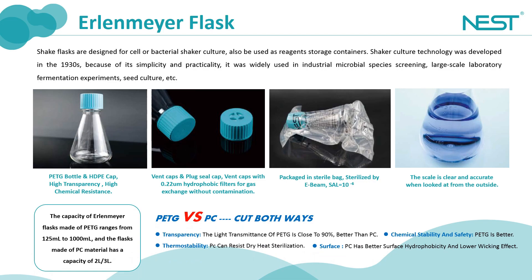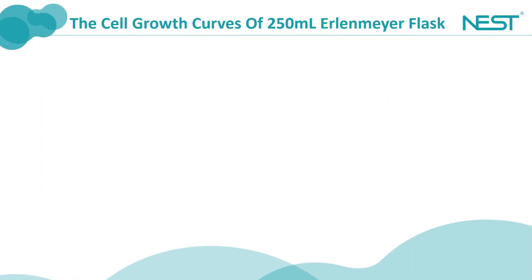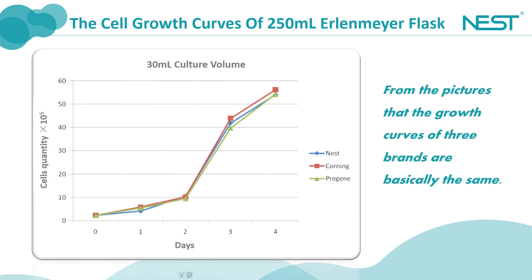PETG has high transparency and higher chemical stability and biosafety. For example, products made of PETG can be used for storage of strong bases, and PETG doesn't contain bisphenol A (BPA). PC materials can resist high temperature and high pressure with better surface hydrophilicity and lower wicking effect. For cell culture products, the most important criteria is the cell culture status. We can see from the pictures that the growth curves of three brands are basically the same, with little difference between Nest and Corning's.